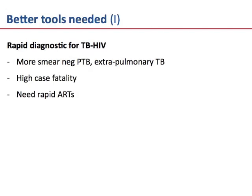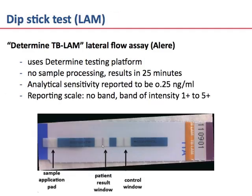We also need a rapid diagnostic for TB in HIV infection, where there are more smear negative cases, more extra-pulmonary TB, and a higher case fatality rate, particularly if introduction of ART antiretroviral therapy is delayed. We recently completed a study of lipoarabinomannan in urine, which is a dipstick test shown here as a positive result. The accuracy of the Determine TB LAM lateral flow is about 36.8% overall, but it is more reliable if CD4 count is less than 50 in the presence of HIV infection.